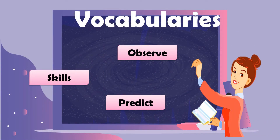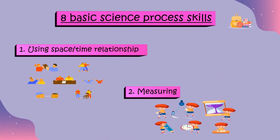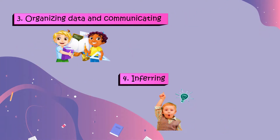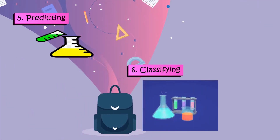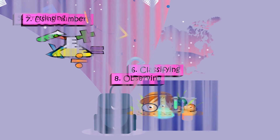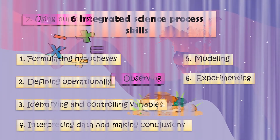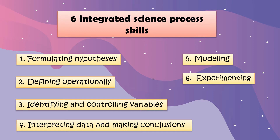Before we proceed, let's read the vocabularies: observe, skills, and predict. Now, what are the eight basic science process skills? Number one: using space-time relationship. Number two: measuring. Number three: organizing data and communicating. Number four: inferring. Number five: predicting. Number six: classifying. Number seven: using numbers. Number eight: observing.